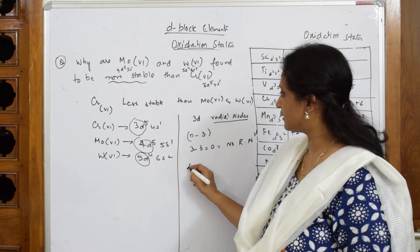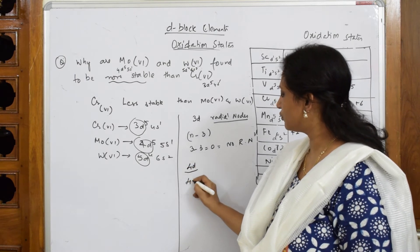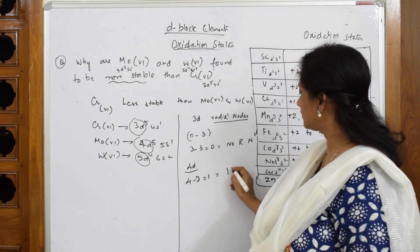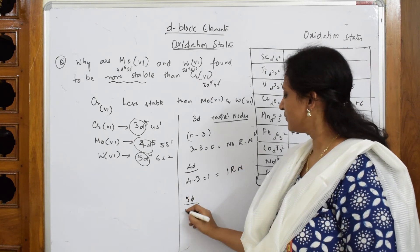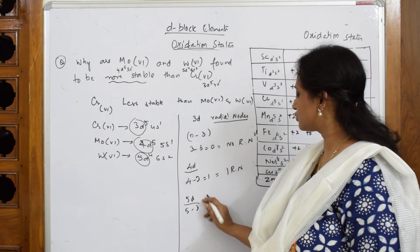When I have to calculate for 4d, it is 4 minus 3 equals 1, it has one radial node. If I have to calculate for 5d, it is 5 minus 3 equals 2, it has two